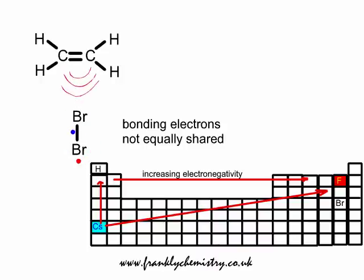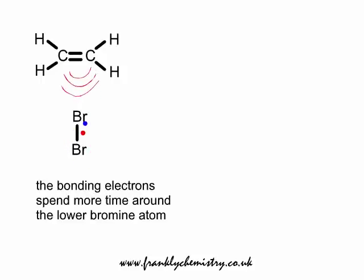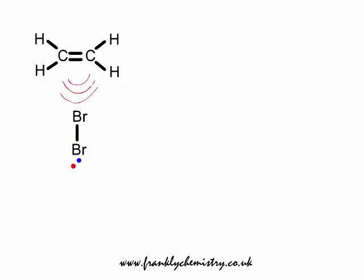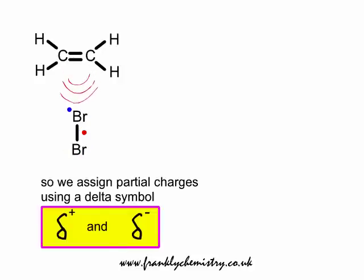But look what happens. This region of high electron density will tend to repel the electrons on the upper side of the bromine atom — one region of electron density repelling another. As a result, the electrons will tend to spend their time more around the lower bromine atom. This will create what is known as a dipole. We need to propose this idea in order to suggest why the Br2 molecule should be attracted in and react with the ethene molecule.